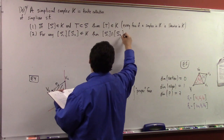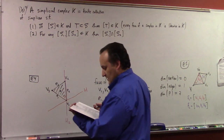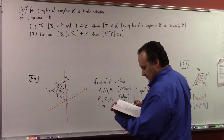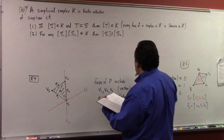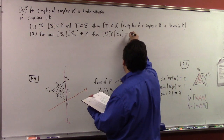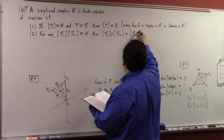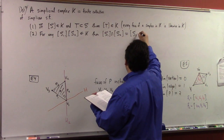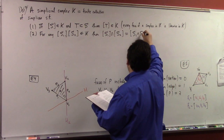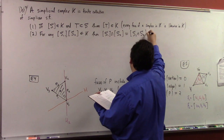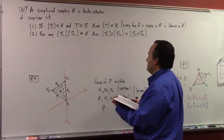A simplex is, after all, just a set of points, so we can intersect it. That is the convex hull of the intersection of the generating sets of points.